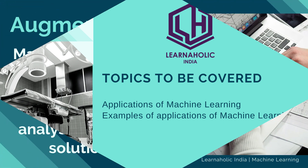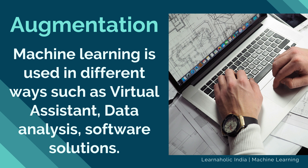The first application is augmentation. Machine learning assists humans with their day-to-day tasks, personally or commercially, without having complete control of the output. Such machine learning is used in different ways such as virtual assistant, data analysis, and software solutions. The primary use is to reduce error due to human bias.